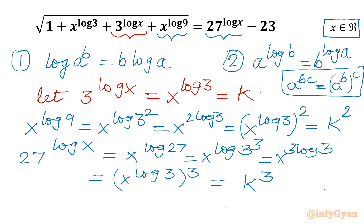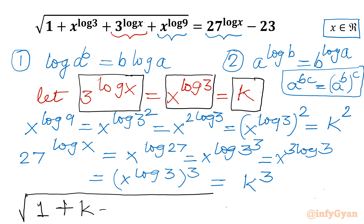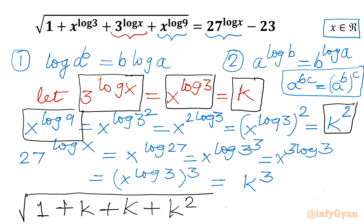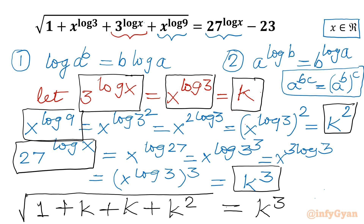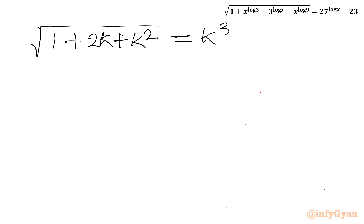Now let's plug these values into our equation. The left-hand side becomes square root of (1 plus k plus k plus k²), and the right-hand side becomes k³ minus 23. So we have: square root of (1 plus 2k plus k²) equals k³ minus 23.